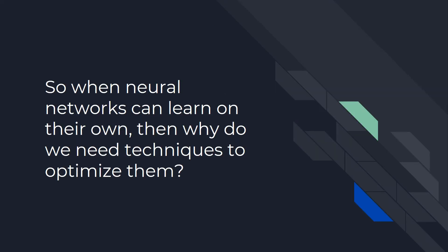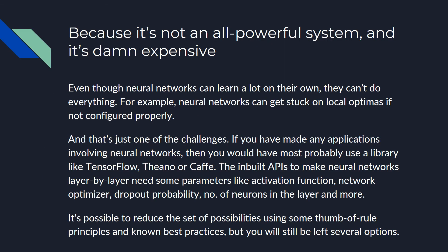So when neural networks can learn on their own, then why do we need techniques to optimize them? Why do we need to evolve the network? Because it's not an all-powerful system, and training is really expensive. Even though networks can do a lot on their own, they can't do everything. For example, neural networks can get stuck on local optima if they are not configured properly — instead of going for the global optimum, they get stuck on a local one, which is not something we want.